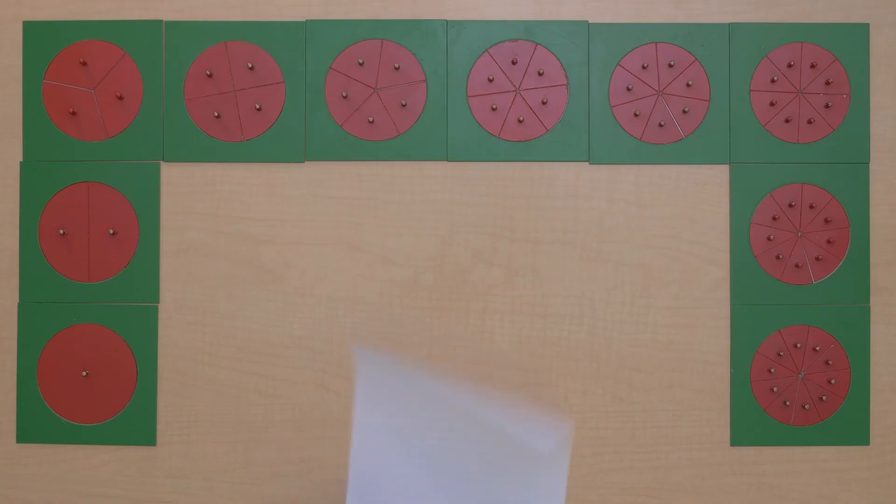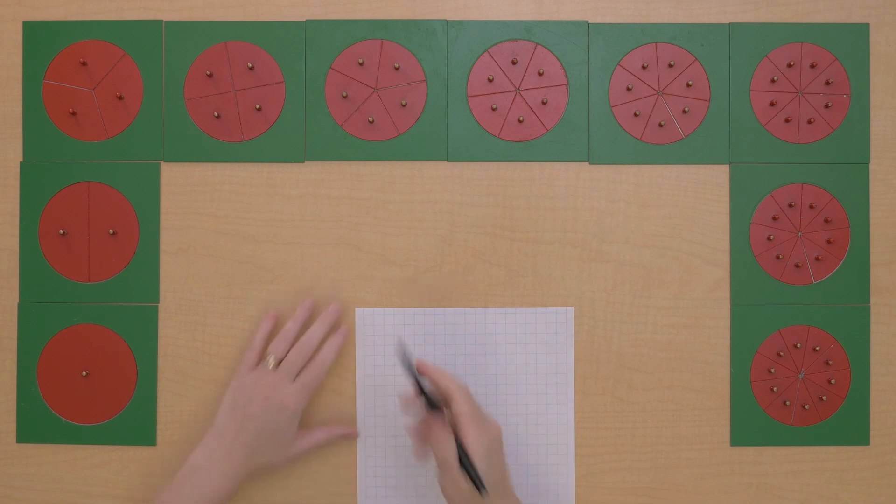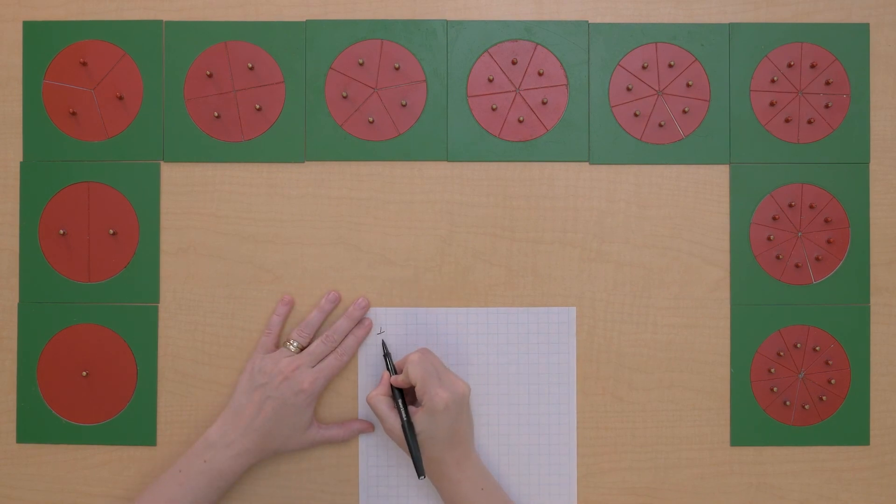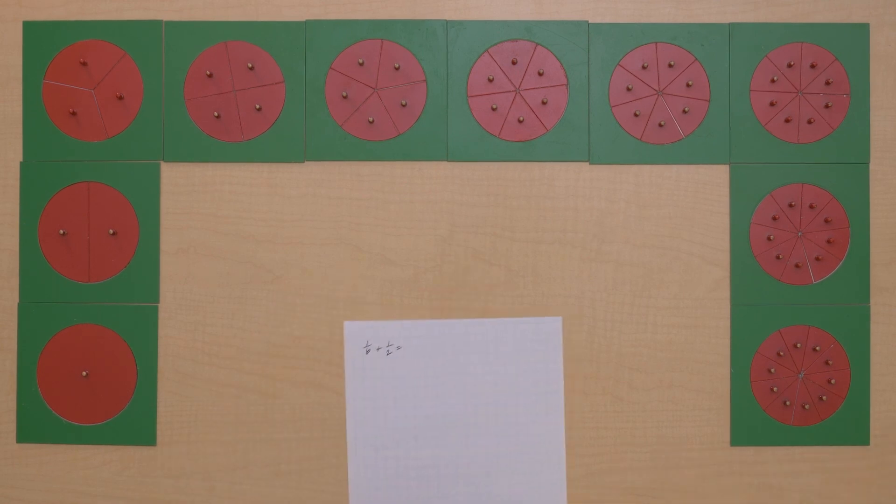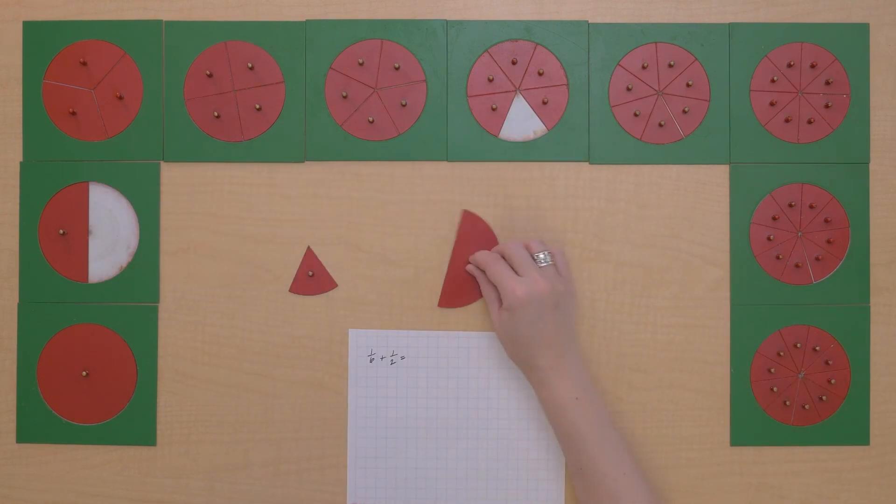Let's do another one. Let's write down our problem this time. So I'm going to do one-sixth plus one-half. So let's get that out. One-sixth plus one-half.